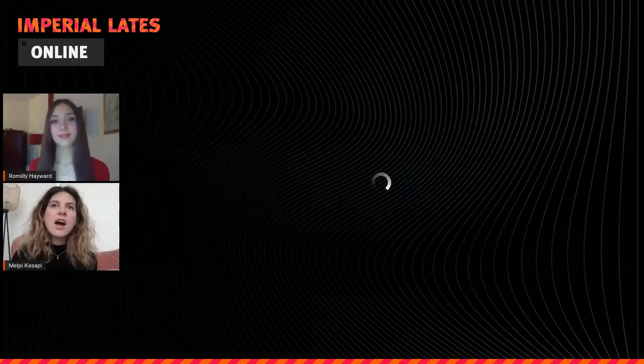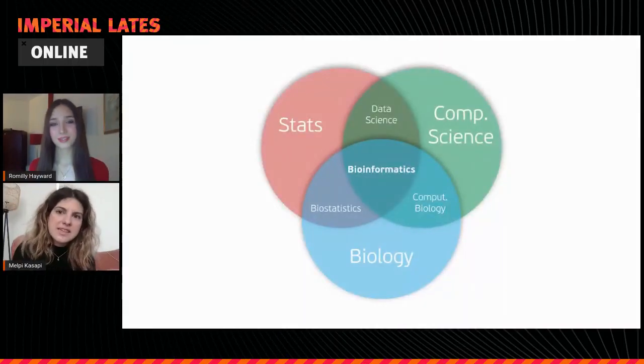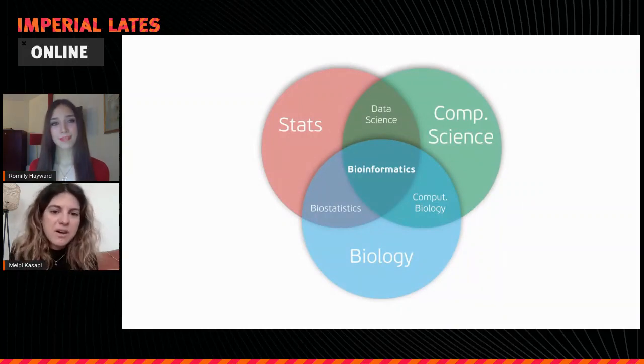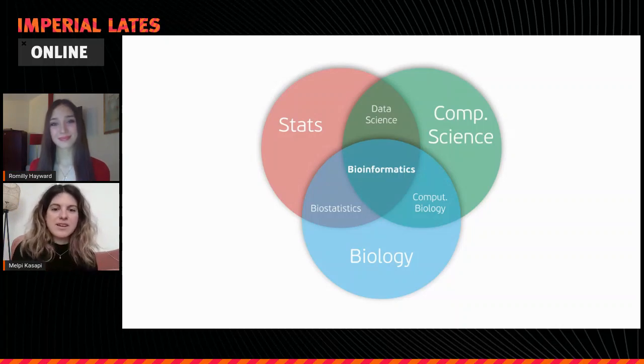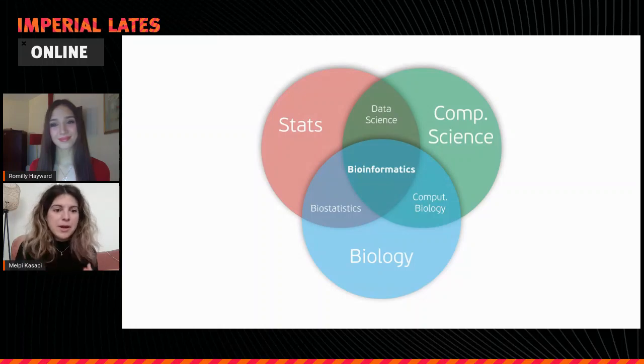You mentioned bioinformatics — what exactly is that? It's a relatively new field. It's a combination of biology with the use of computer science, and it has a little bit of statistics and data science in it as well. You can see in a Venn diagram all the different fields that are combining to form bioinformatics. It's essentially being able to answer biomedical and biological questions with the use of robust modeling, statistical methods, and programming.